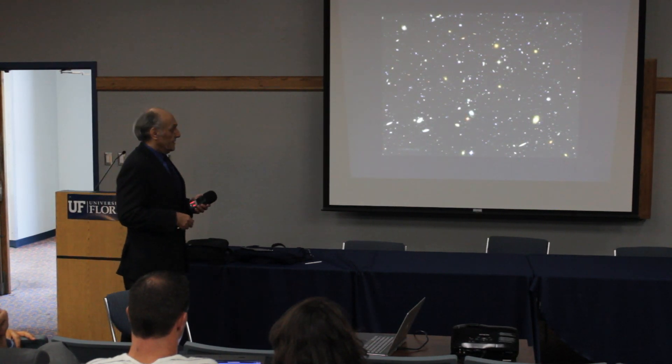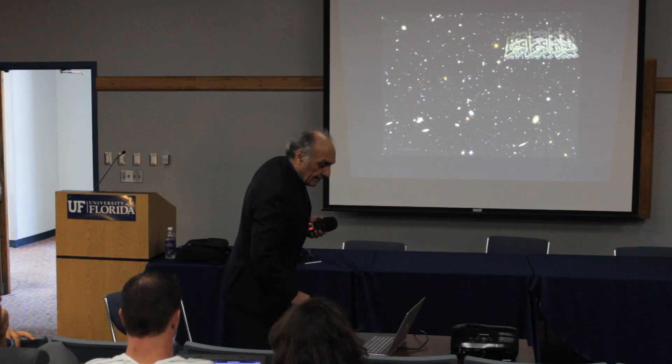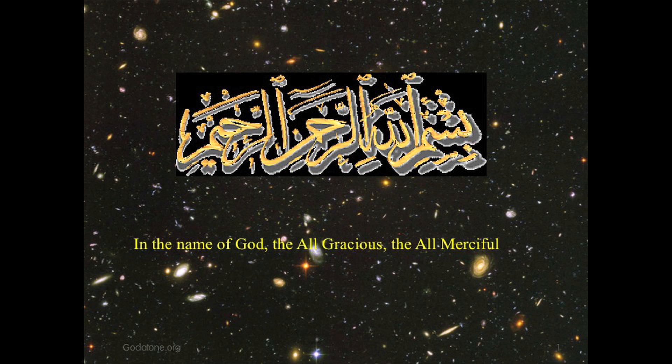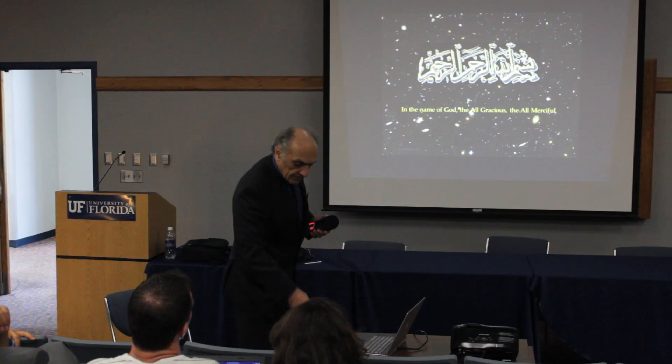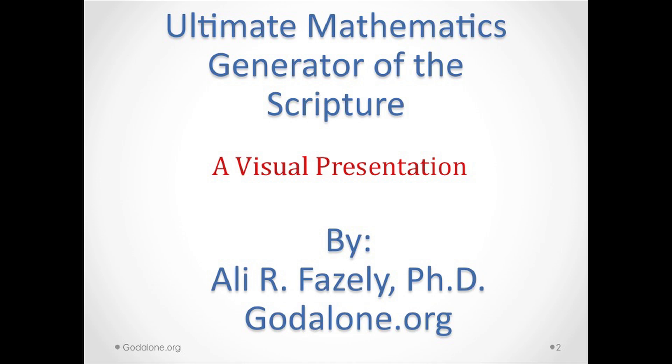This is the opening statement of the Quran, and the meaning of it is in the name of God, the gracious, the merciful. So that's how the Quran starts. Ultimate mathematics generator of the scripture. I'm going to give a visual presentation of how this mathematics actually generates the Quran and the parameters of the Quran. You will see that this is our website here, GodAlone.org.